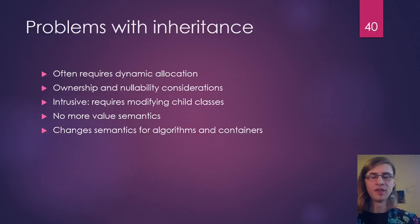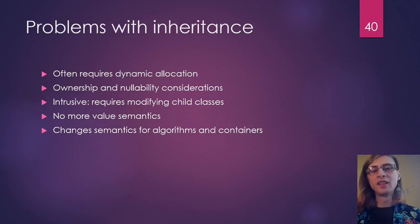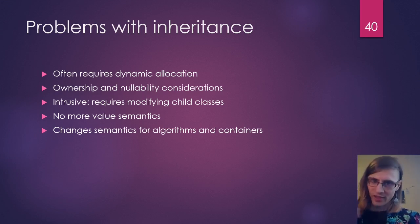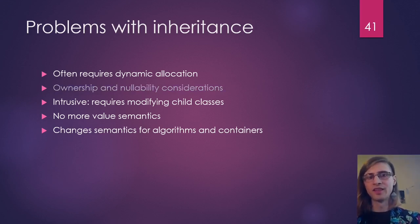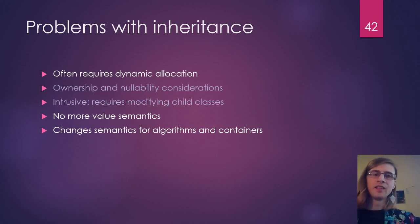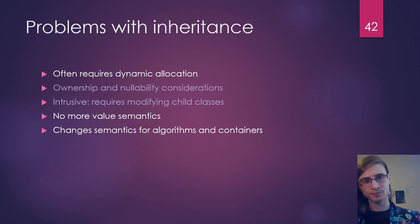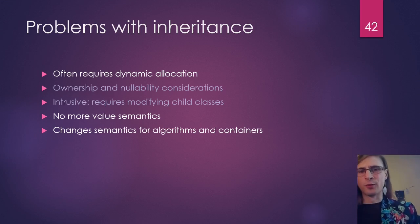So these were our problems with inheritance, and we've solved some of them now. Since we're handling memory allocation internally and don't have pointers external to our interface, we don't have the ownership and nullability considerations anymore — it's just an object, it can't be null, and we know who owns it. We've also got rid of the intrusiveness problem: we don't need to modify the child class or decorate it with inheriting from the base class. But we still have three other problems: we don't have value semantics because we didn't define what it means to copy this thing, we can't store it in a container as a normal object, and we're always doing dynamic allocation when you create an animal object.